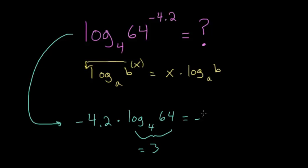So our problem becomes minus 4.2 times 3. And our final answer, 3 times 4 is 12, and 3 times 0.2 is 0.6. So we have minus 12.6. And this is our final answer.